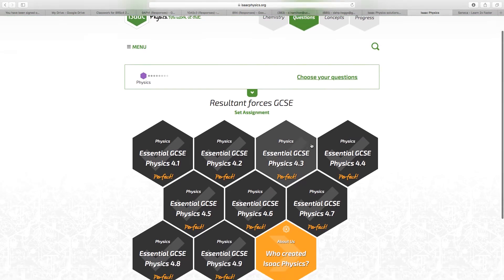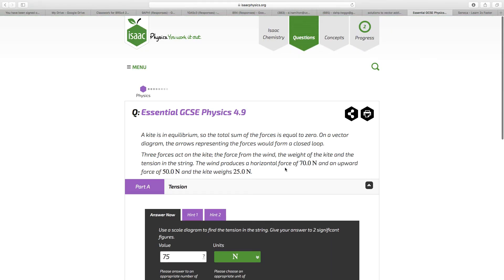Finally then, 4.9. The kite is in equilibrium, so that the total sum of the forces is equal to zero. That's what equilibrium means, no resultant force. On a vector diagram, the arrows representing the forces would form a closed loop. This is one of the things that you can do to verify equilibrium, or to establish the force required to produce equilibrium by drawing this scale vector diagram. You're given three of the forces, the force from the wind, the weight, and the tension. The wind produces a horizontal force of 70 newtons, 70.0, an upward force of 50.0 newtons, and the kite weighs 25.0 newtons.